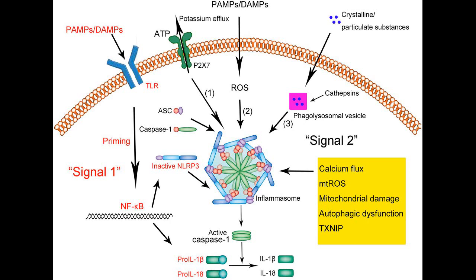Crystalline substances are also potent activators of inflammasomes. These crystals can be derived from the environment, such as asbestos and silica, or they can be endogenously derived, such as monosodium urate, calcium pyrophosphate dihydrate, and cholesterol. Additional activators include extracellular ATP, perhaps released from dead cells and transported into the cytoplasm of the responding cell, as well as generation of reactive oxygen species, which are toxic free radicals of oxygen often produced during cell injury.